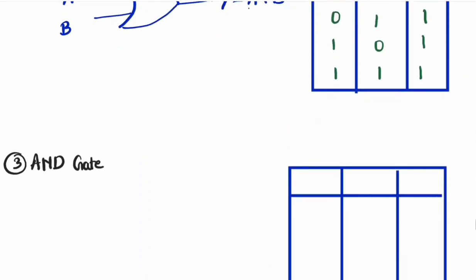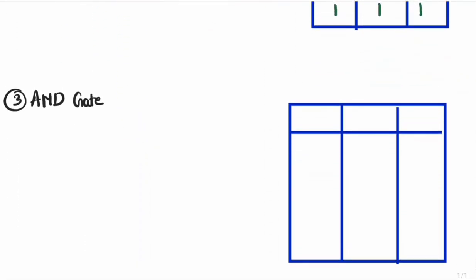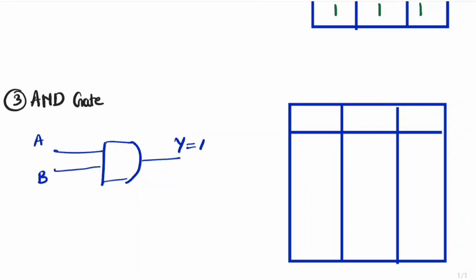Now we'll look at the final basic gate: the AND gate. The AND gate also has two or more inputs — we are considering two inputs here. This is the symbol, with inputs A and B and output Y. AND is nothing but A multiplied by B.